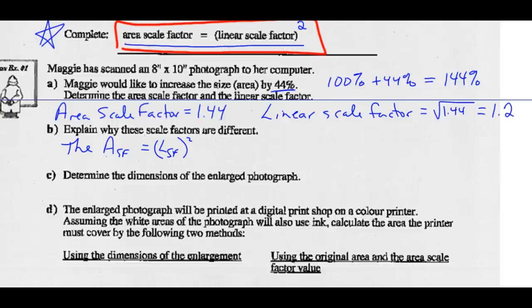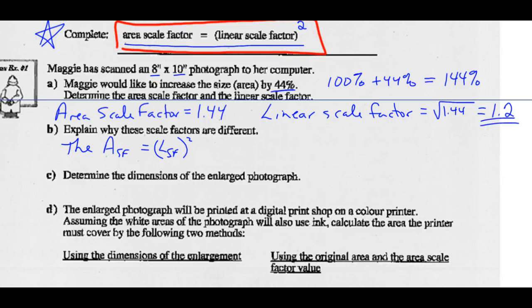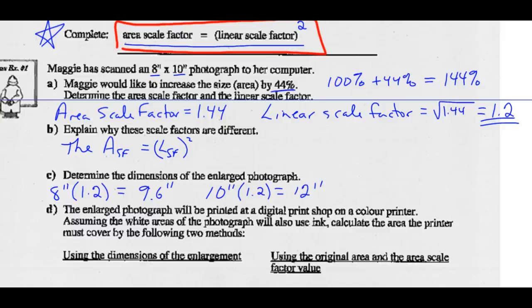Determine the dimensions of the enlarged photograph. The original dimensions were 8 by 10 — those are linear dimensions. We now have a linear scale factor of 1.2. So we take our dimension of 8 inches and multiply by 1.2: the new width is 8 times 1.2, which is 9.6 inches. And the length is 10 times 1.2, which is 12 inches. So the new dimensions are 9.6 inches by 12 inches.